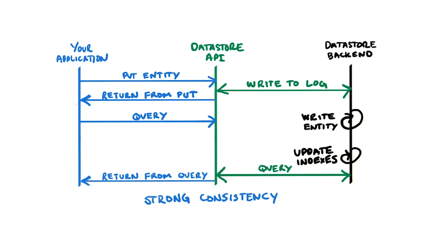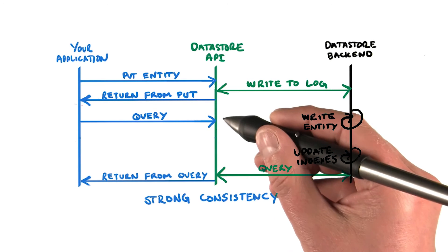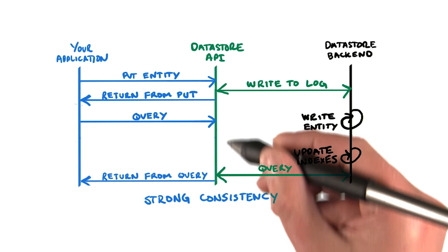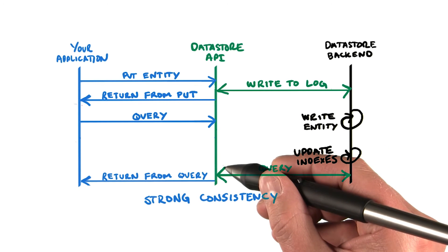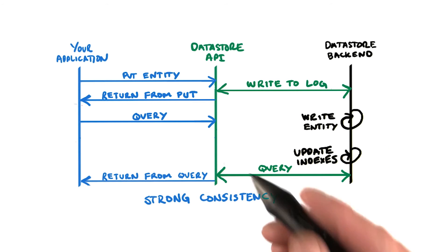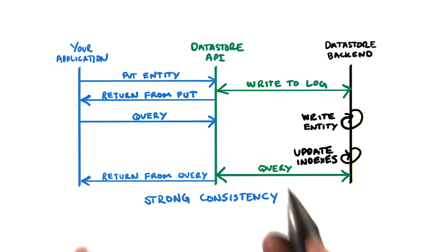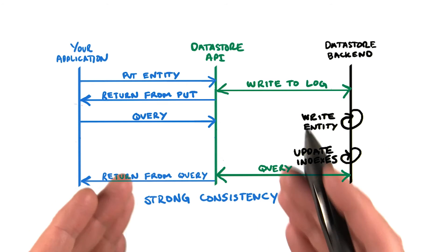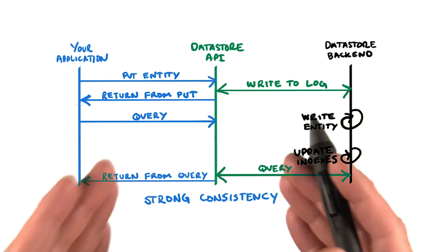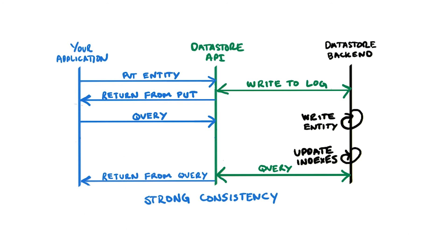You may now ask: why don't I use strong consistency all the time? Well, remember the use case. Strong consistency causes a lot of waits and locks in your application. So if you want to build applications that scale, you should use eventual consistency as often as possible.